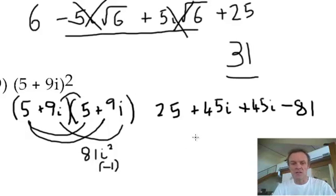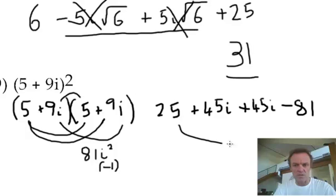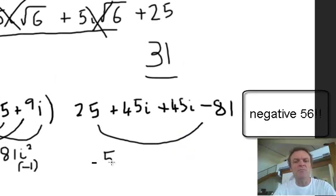The answer is, let's combine these. 25 take away 81. Panic, panic, panic. 81 take away 25, 56. Check on that one. So that's 56. Remember, put the real number first.